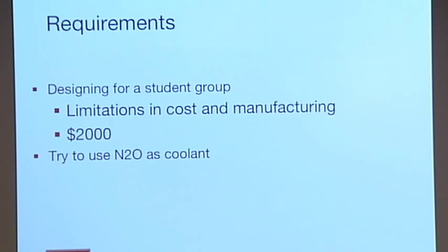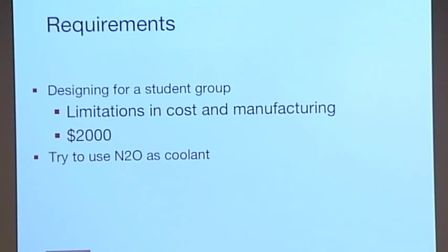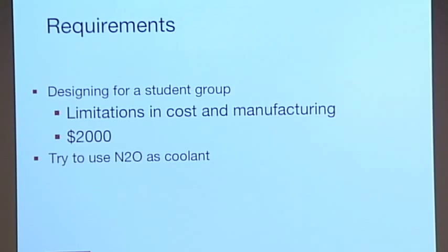And they also have limitations in manufacturing because here at BU, BURPG can only make parts from the BU facilities. And while we have a lot of machines, it's not perfect and we can't do whatever we want. And then finally, they wanted us to use N2O as a coolant. This is because they already use it in the rockets and it'd be really convenient. And I'll talk about why we can or can't do that.